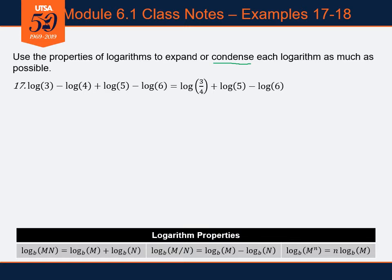Next step: I've got log of 3/4 plus log of 5. I'm adding two logarithms, so my product rule comes into play — I can combine those into a single logarithm of a product: log of 3/4 times 5. Then I bring down the minus log of 6. All I've got left is subtraction, so I turn that subtraction into division — subtracting two separate logarithms turns into a single logarithm with division.